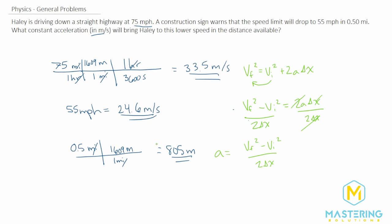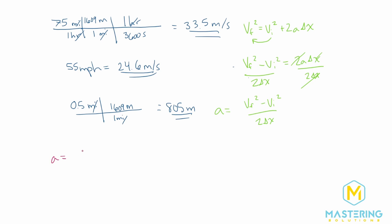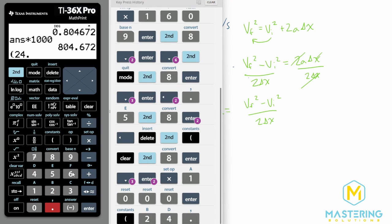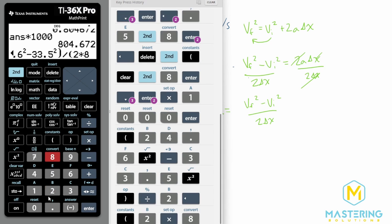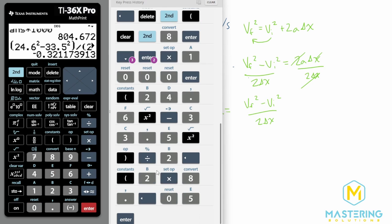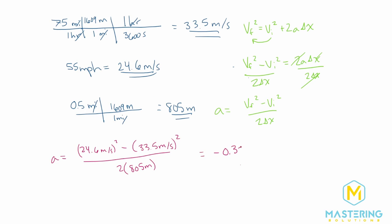Now we plug everything in. Acceleration equals the final velocity of 24.6 m/s squared, minus the initial velocity of 33.5 m/s squared, all divided by 2 times the delta x of 805 meters. So that is (24.6² − 33.5²) / (2 × 805), which gives us a constant acceleration of negative 0.32 meters per second squared. She must decelerate at 0.32 m/s² to slow down in time for the construction zone.